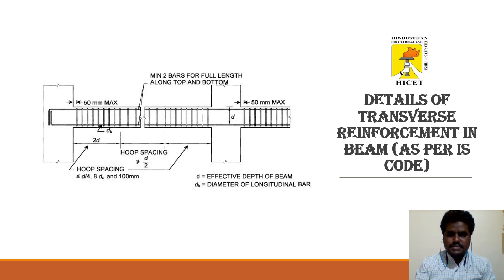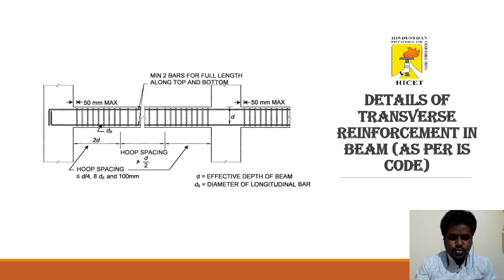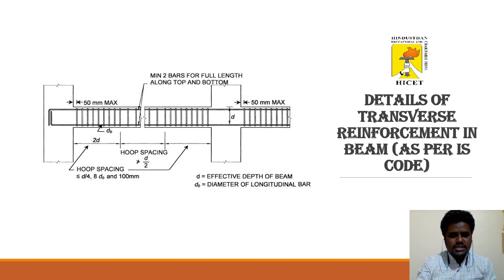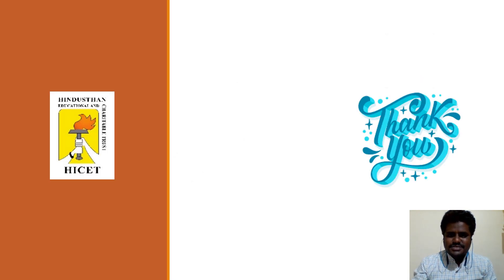For transverse reinforcement details per the ductile detailing code, hoop spacing shall be less than or equal to d/4 or 8db, with a maximum of 150 mm at support sections. A minimum of two bars shall be provided along the full top and bottom length, though typically four bars are provided depending on load conditions, number of floors, and soil test results. Additional cranked reinforcement is provided at support sections as per the latest analysis recommendations. Thank you for watching this video.